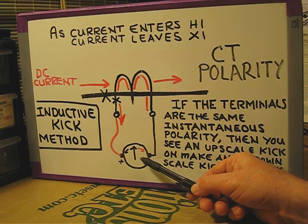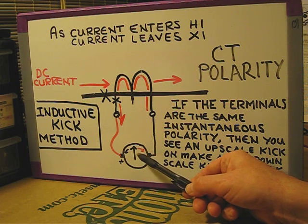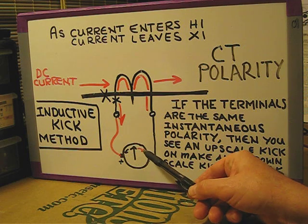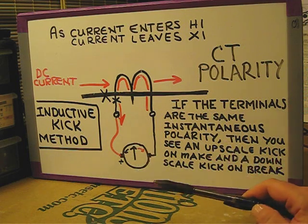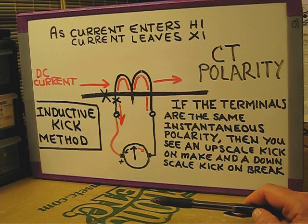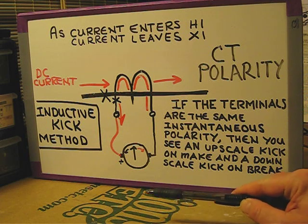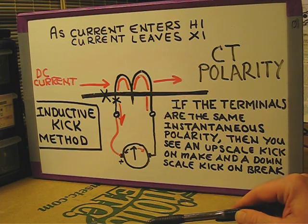To measure, we'll be using a DC milliamp meter with a zero center scale so that the needle can swing to the left or to the right. If the terminals are the same instantaneous polarity, then you will see an upscale kick when we make the DC circuit and a downscale kick when we break the DC circuit.